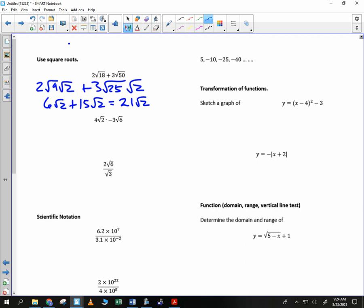How about if I multiply them? What do I do here? What do I do with the 4 and the negative 3? I get negative 12. What do I do with the 2 and the 6? Am I done? No, because you can reduce the square root of 12, correct? So negative 12, root of 4, root of 3. Root of 4 is 2 times negative 12 is negative 24 root of 3.